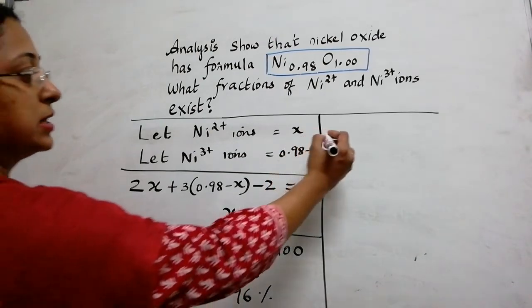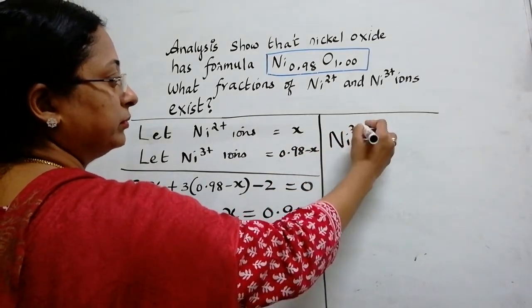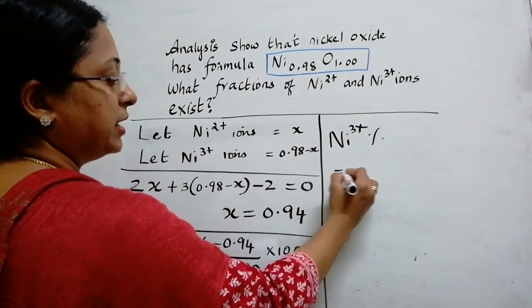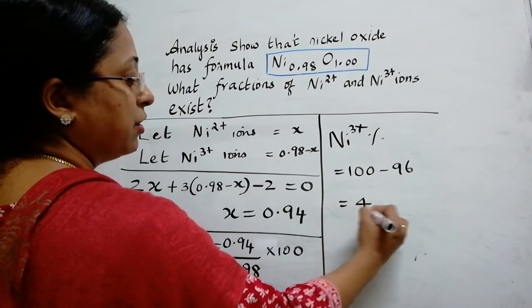From this we can easily now calculate for nickel 3+. So what is nickel 3+ percentage? Nickel 3+ percentage is nothing but 100 minus 96. Therefore you get 4%.